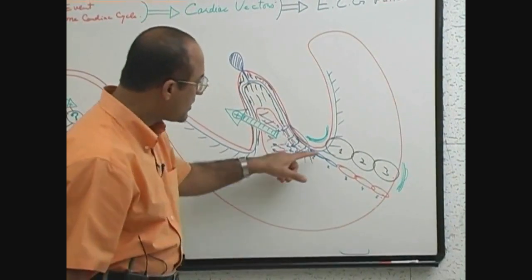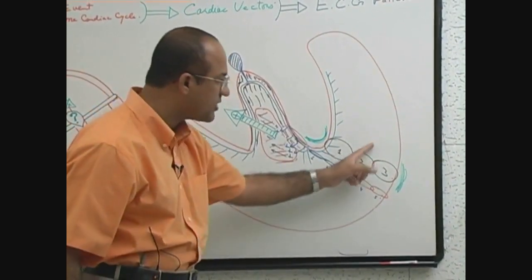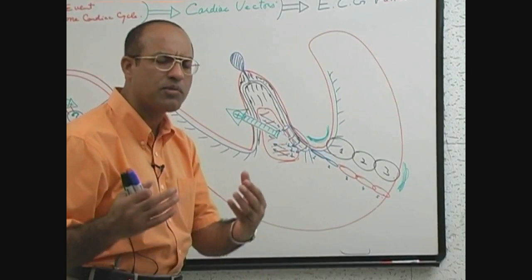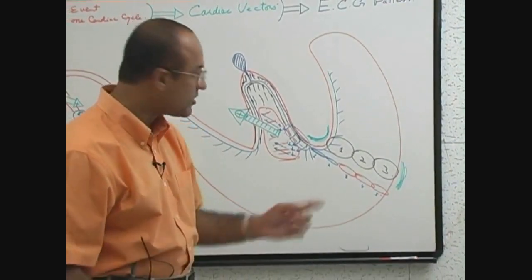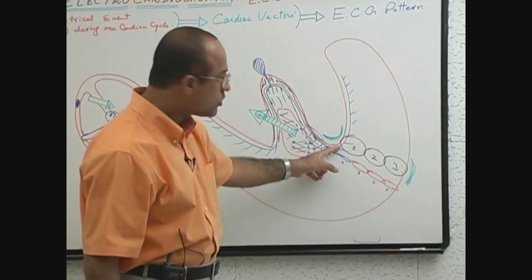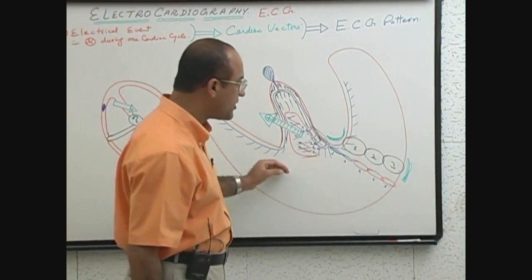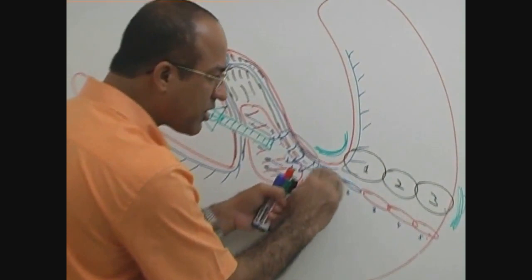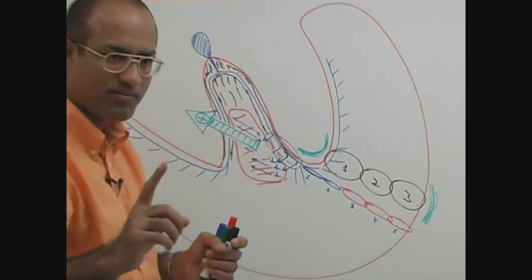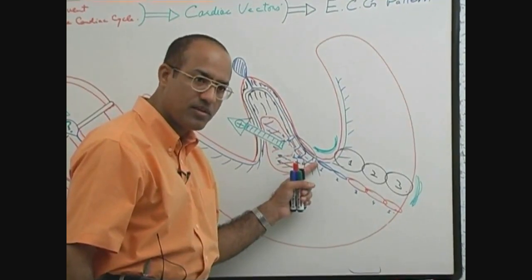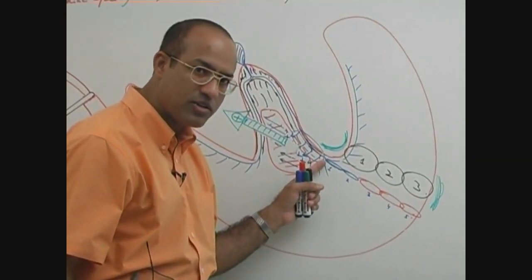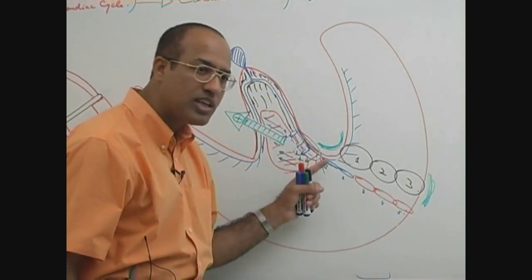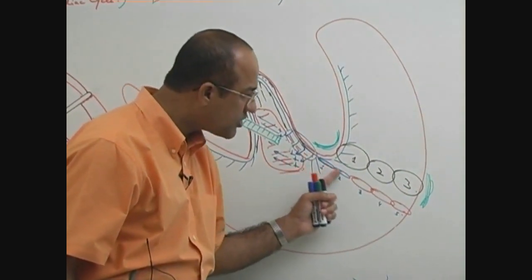The Purkinje system is not in the middle — it is in the very deep or inner myocardium. So which part of the myocardium will be first depolarized? That is the inner myocardium. Depolarizing currents are generated first in the inner myocardium, because the specialized conduction system is embedded in the deepest myocardium. Inner myocardium is first stimulated and then the wave of depolarization moves outward.